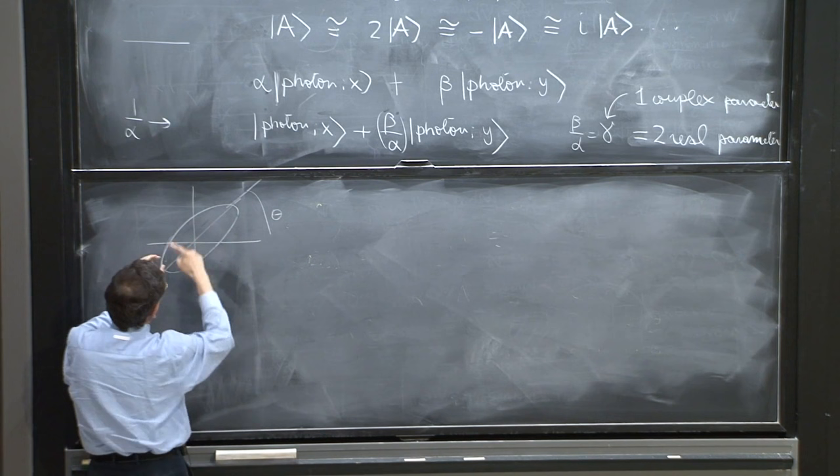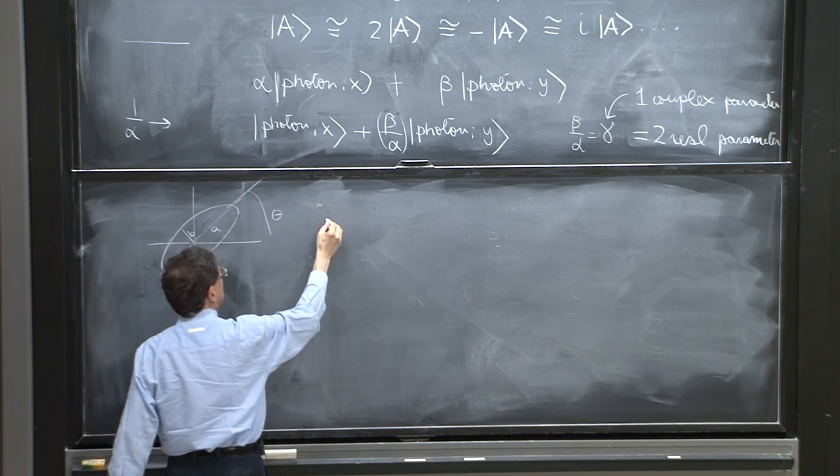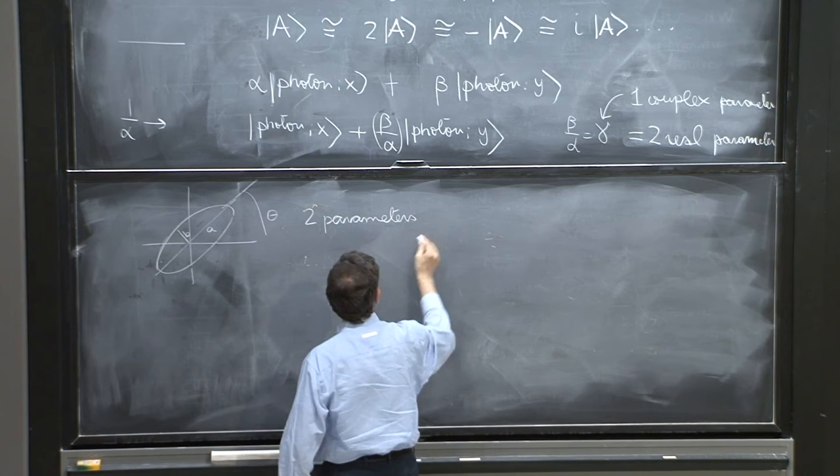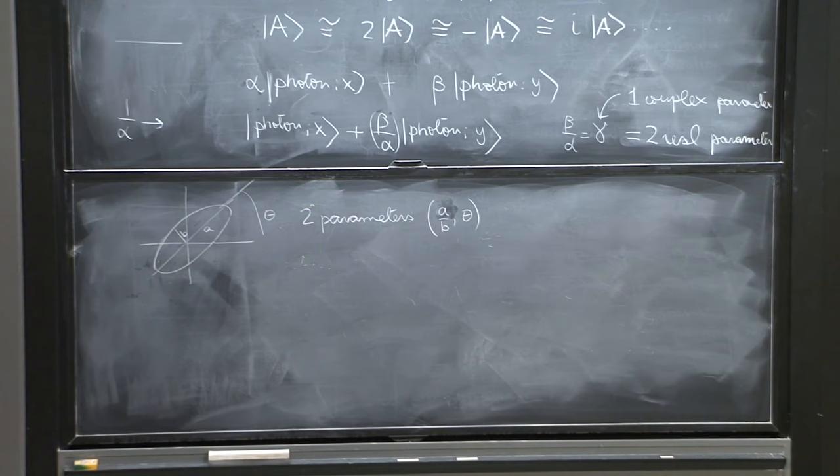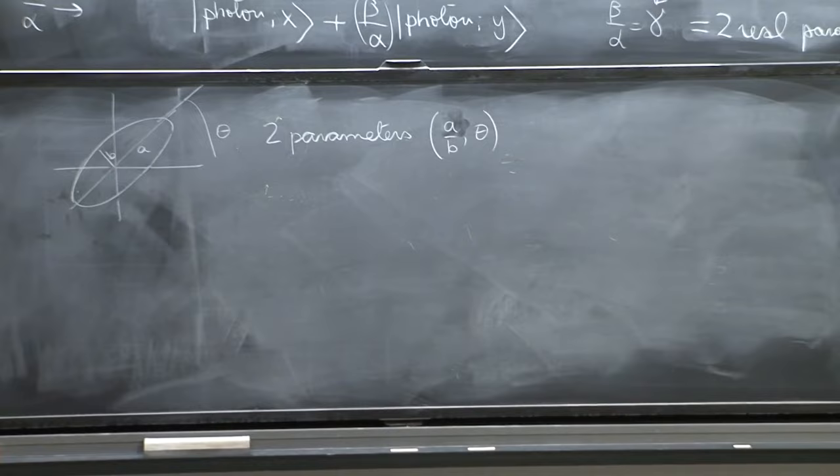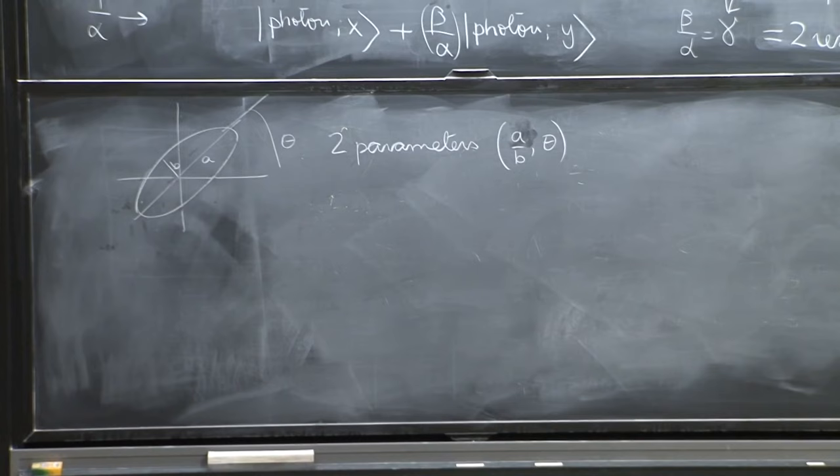And that ellipse has an angle that is one parameter. And for an ellipse, since the size doesn't matter—the size depends just on the magnitude of the electric field, it's not a parameter of the polarization of the wave—since the size doesn't matter, it's the shape of the ellipse that matters. And that's characterized by the eccentricity, or by the ratio a over b of the semi-major axis. Two parameters: a over b and theta. So an elliptically polarized wave has two real parameters. And now, thanks to this physical assumption, we get this right.